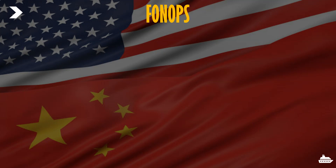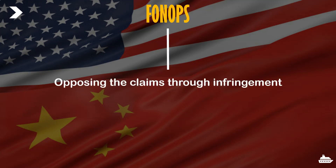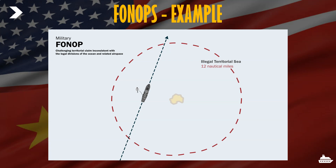This is why the US, and now Japan, are conducting freedom of navigation operations — FONOPs. These challenge excessive maritime claims like China's by opposing them through intentional infringement. For example, if China built an island and claimed illegal territorial sea around it, the US would intentionally send military vessels through that region to challenge claims inconsistent with legal ocean divisions. If China declared it an illegal passage, the US would respond by asserting that the territorial sea claim itself is illegal.